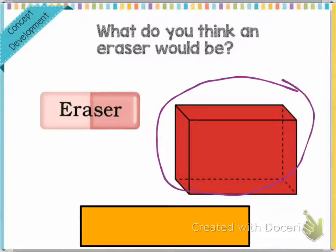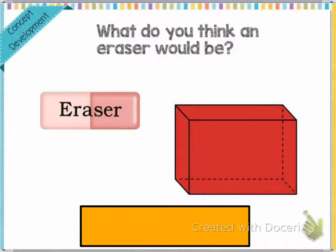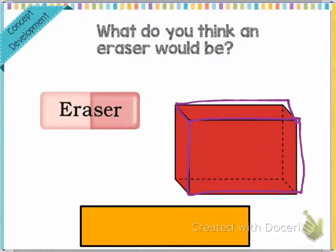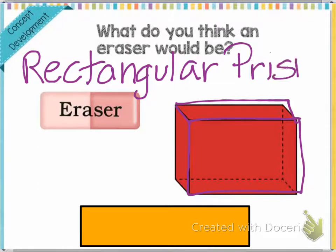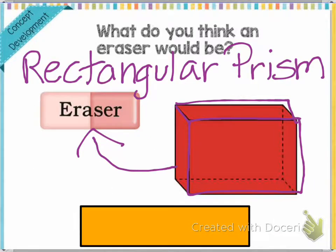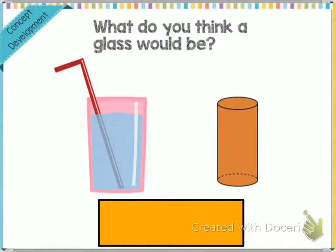One thing I notice when I first look at this shape that looks like the eraser is that this shape has faces that are rectangles. This makes me automatically think that this one must be a rectangular prism, because it even says 'rectangular' right in the name. So we know that this eraser is shaped like a rectangular prism.